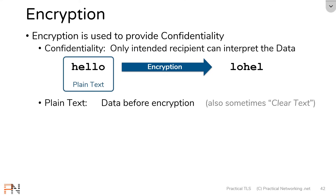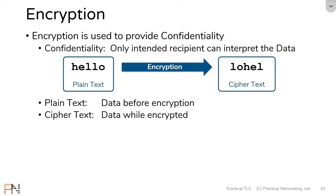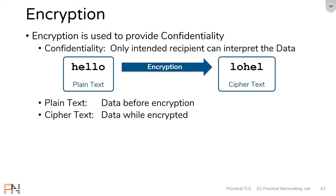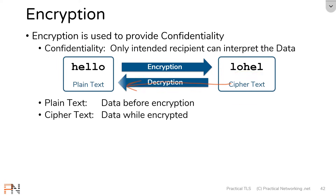The data after it was encrypted is referred to as ciphertext. The idea is that the sender is going to generate some plaintext, encrypt it, and then send it across the wire as ciphertext. The only person that should be able to take the ciphertext and turn it back into the plaintext — otherwise known as decryption — should be the intended recipient of the message.